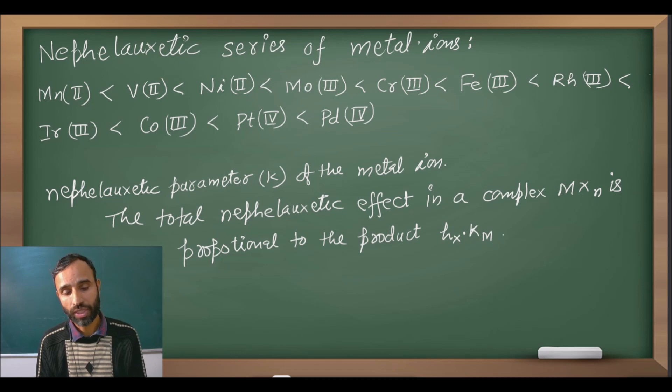Now nepheloxetic series of metal ions. So here see: Mn(II) < V(II) < Ni(II) < Mo(II) < Cr(II) < Fe(III) < Rh(III) < Ir(III) < Co(III) < Pt(IV) < Pd(IV).